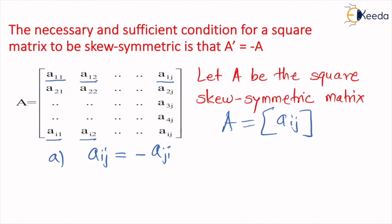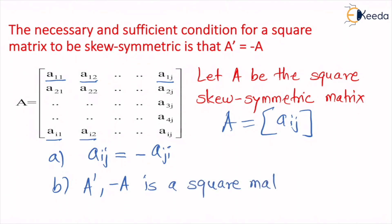The second condition we can derive whenever A is a skew symmetric matrix is that A dash, which is nothing but the transpose of A, or minus A, is a square matrix. So A is skew symmetric and square, and that is why A dash and minus A are square matrices. Now we have to prove the condition that A dash is equal to minus A.